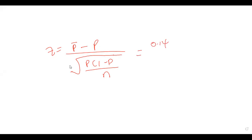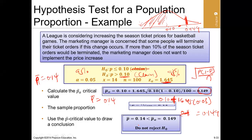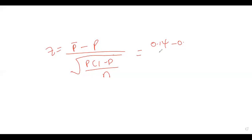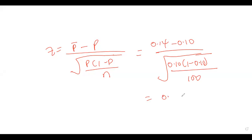The population proportion as given in the question is 0.10. So we compute the square root of 0.10 times (1 minus 0.10) all over 100, giving us a standard error of 0.03. So the z numerator is 0.14 minus 0.10, all over 0.03.